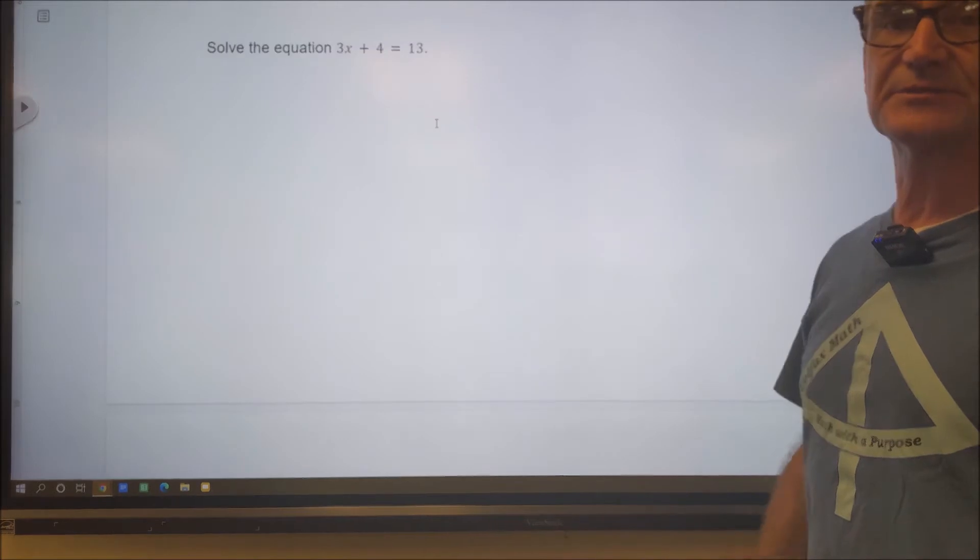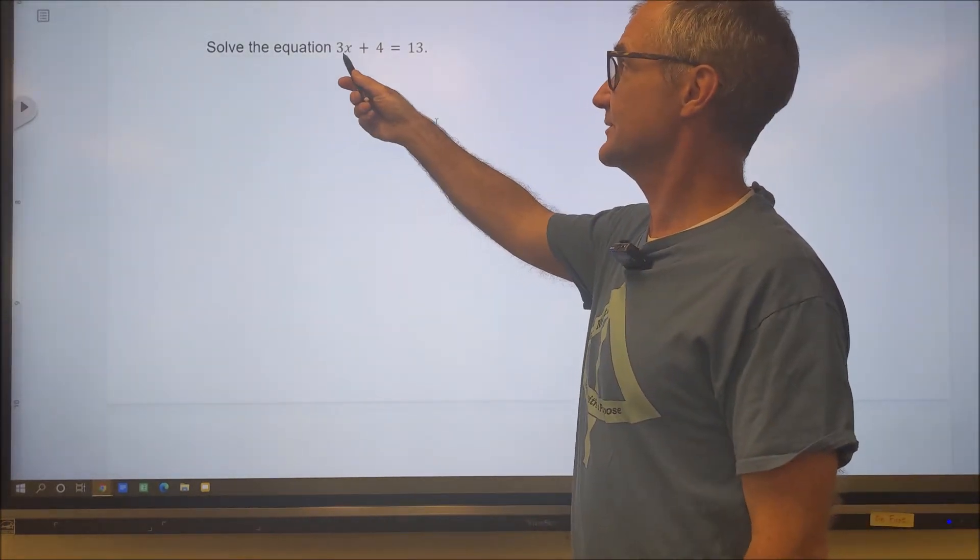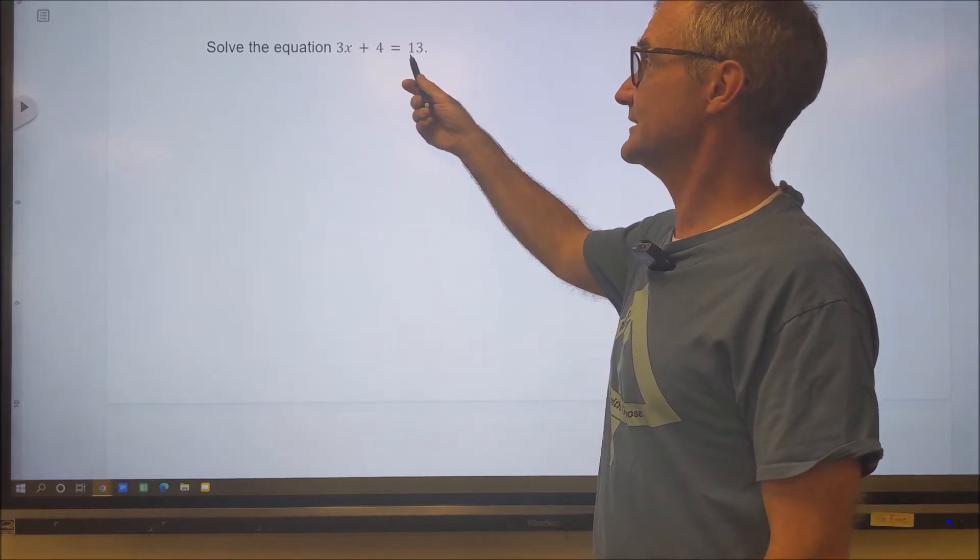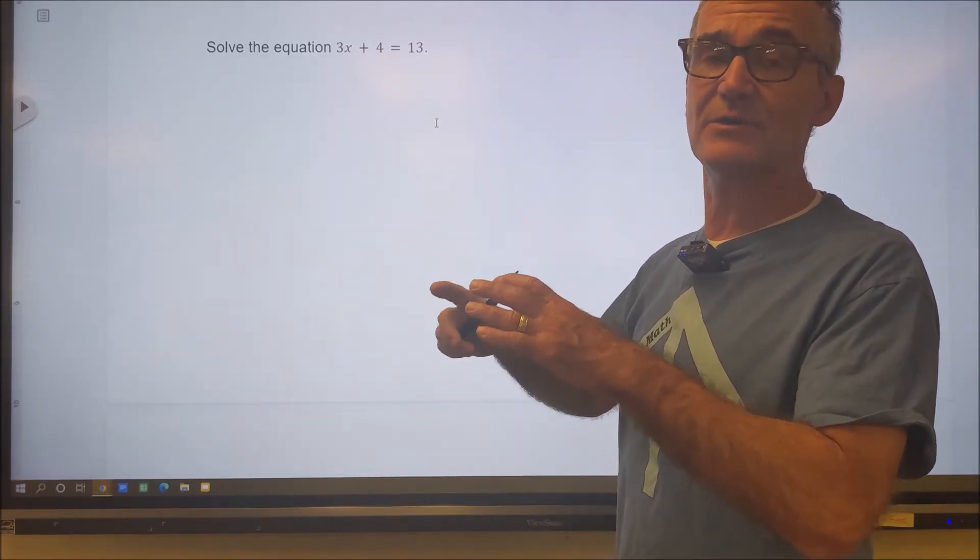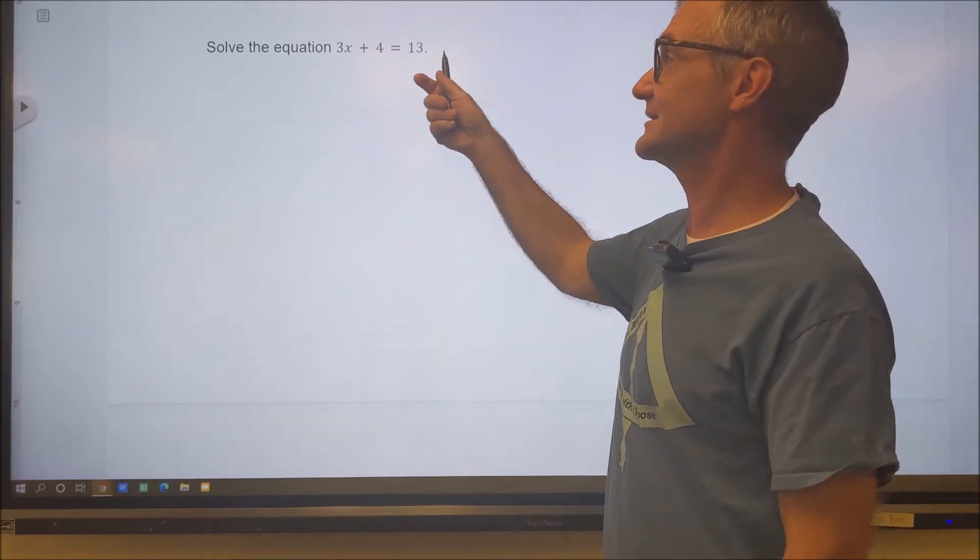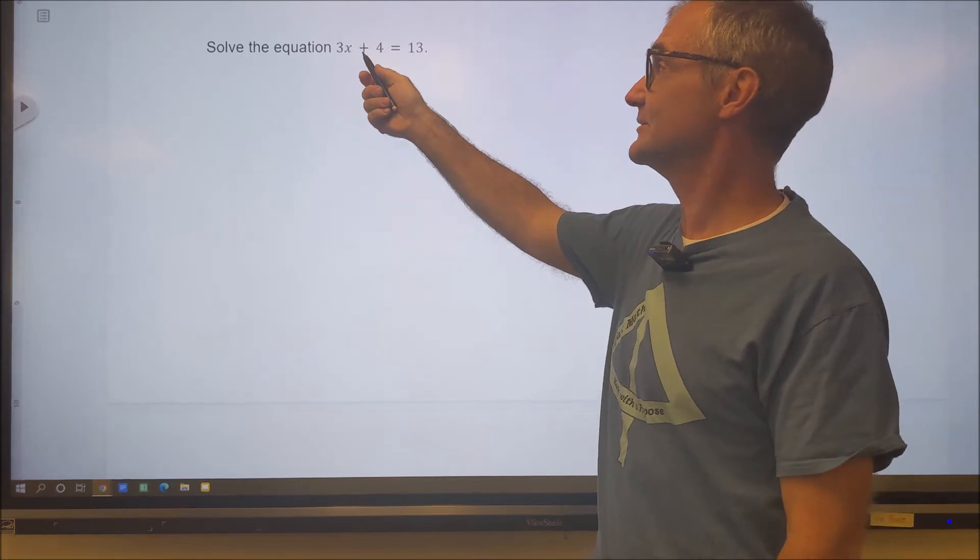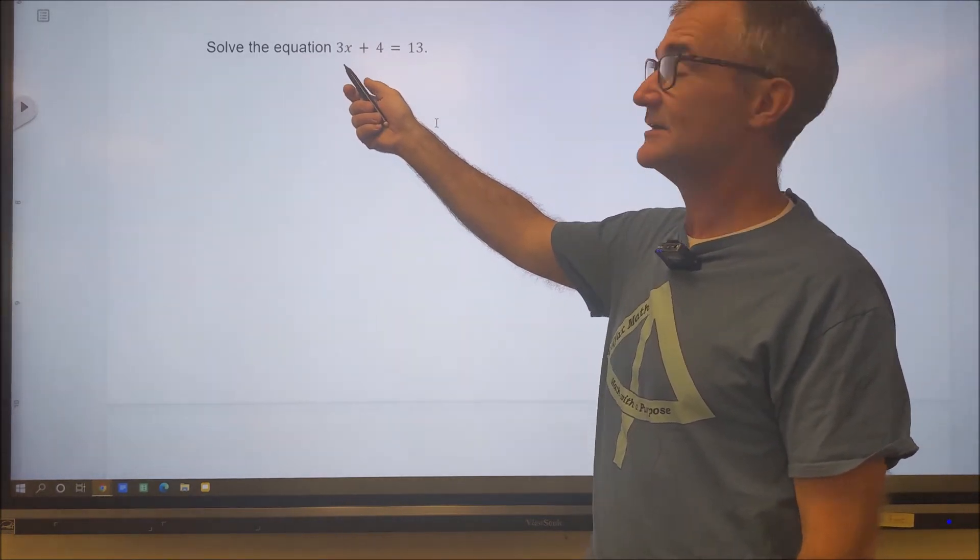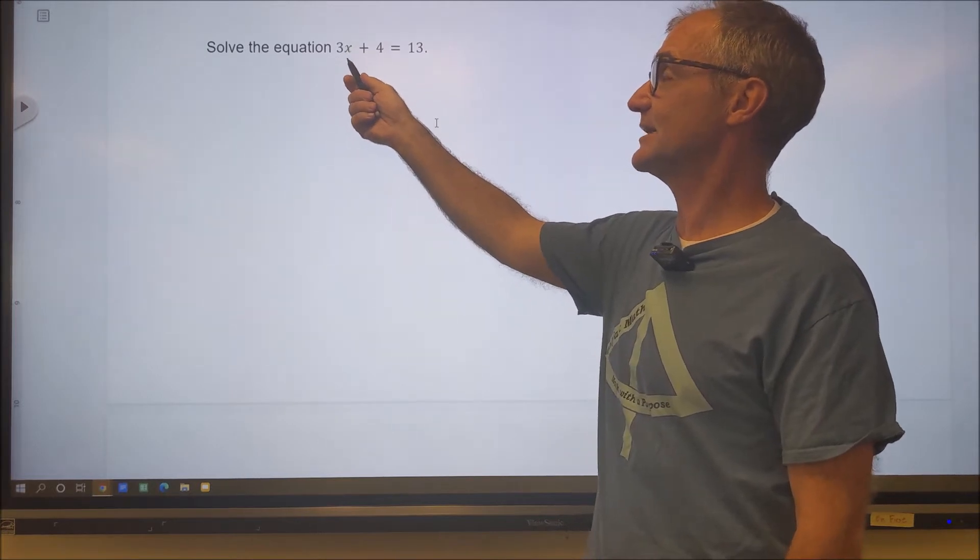From expressions, let's move on to an equation. So right here it says solve the equation 3X plus 4 equals 13. It's an equation because there's an equal sign. I have no value for X. I want to know what X is equal to in the equation. The way I do that is I have to isolate that value X to get it by itself.